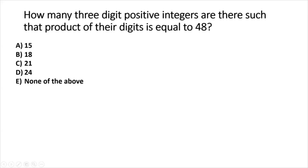How many three-digit positive integers are there such that the product of the digits is equal to 48? This is actually one of the harder problems in GMAT and GRE — not so much hard as it is time-intensive, because we'll have to do some exploration into factors of 48 and find three digits. Once we find those digits, we'll generate permutations to find how many three-digit positive integers have a digit product of 48.